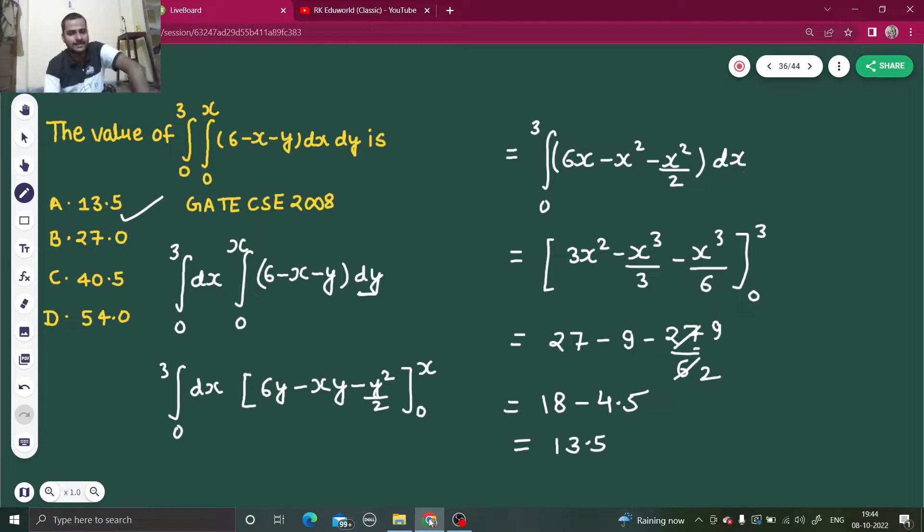You could have solved this like 6 minus x minus y, so 6 minus x minus y whole squared divided by 2. But this is a shorter way because there are fewer steps in this method. I hope you learned something from this video. There is obviously a fear of double integrals, but there was nothing to fear about in this case. Only simple formula of integration was there, that integration of x power n is x power n plus 1 divided by n plus 1. That's it. I hope you enjoyed it. Thanks and have a nice day.